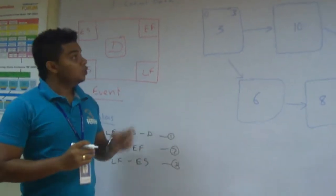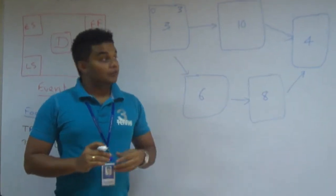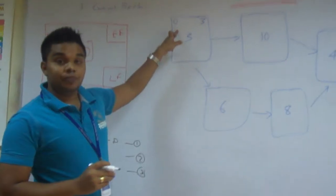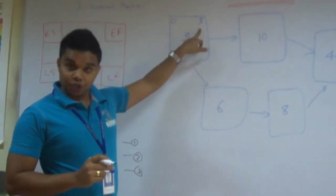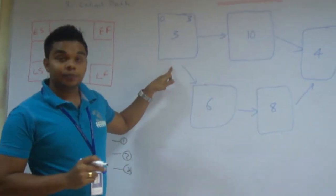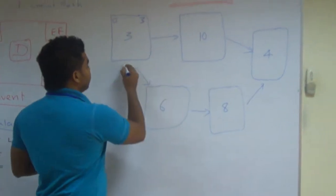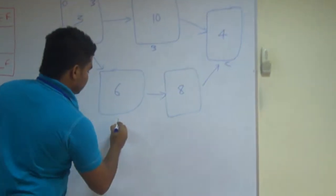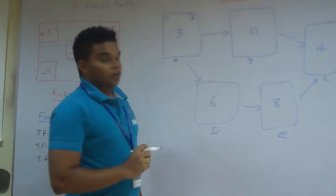Now what I am going to do is, I will use a method called forward pass method. In this method I will use a start date, I will add the duration so I have the earliest finish date. So immediately after finishing event here, I can start this event. We will call it event A, B, C, D, E for our easy reference.